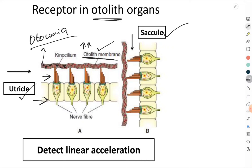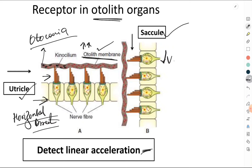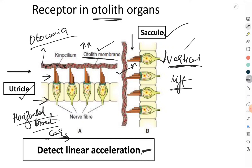In the utricle, the hair cells are arranged in a horizontal plane, so the utricle detects linear acceleration in the horizontal direction — for example when a person moves horizontally. In the saccule, the hair cells are arranged in a vertical plane, so the saccule detects linear acceleration in the vertical direction — for example, when a person moves up and down in a lift.